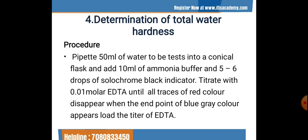Once all the chemicals are added to the water sample, we start titration using 0.01 molar EDTA. After adding the black indicator, if water hardness is present, the solution appears red in color. Once all the hardness is removed or neutralized, it gives a blue-gray color — that is the endpoint of the titration. We note down the amount of EDTA used and stop the reaction at that point.